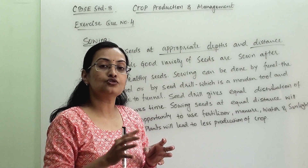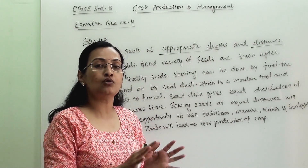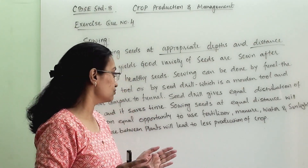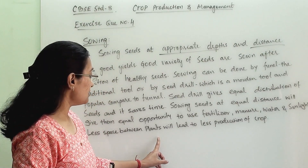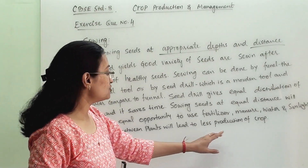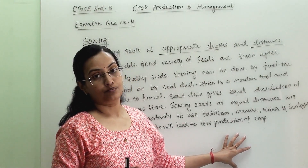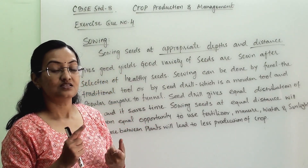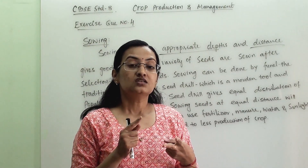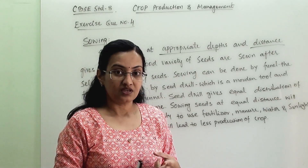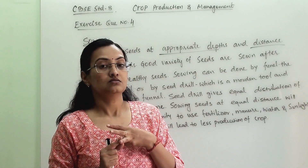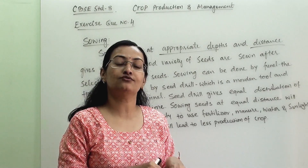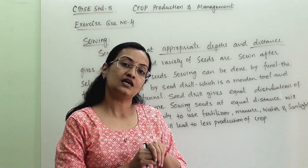Equal distribution of seeds gives them equal opportunity to use whatever we provide to them. Less space between plants will lead to less production of the crop. So it is very important that the seed should be healthy, placed at proper depth, placed at equidistance, and before all that, preparation of the soil is important.